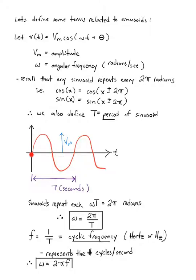From this we can also define the period T of the sinusoid. If we start at time zero, one period would be where it repeats after T seconds. Multiply this by omega and you get exactly 2π radians. We can also define cyclic frequency as f = 1/T in units of hertz, representing the number of cycles per second.